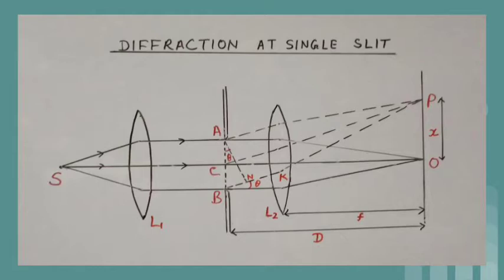The secondary waves which travel in a direction making an angle theta with CO reach a point P on the screen, where the intensity depends on the path difference between the secondary waves.